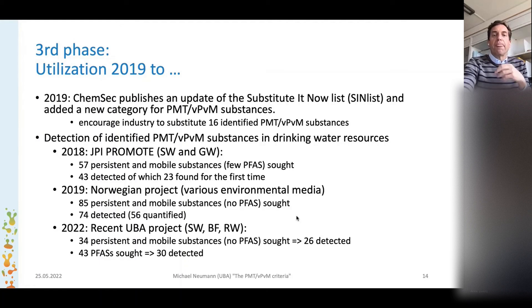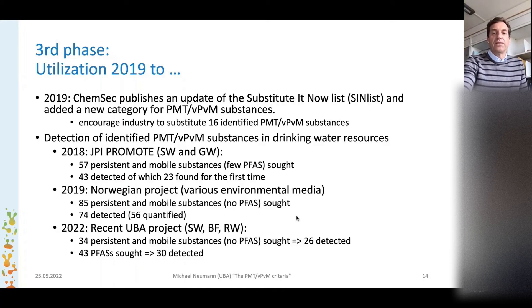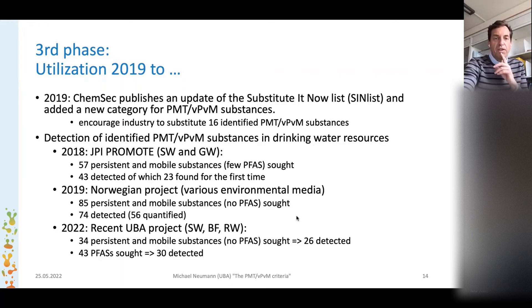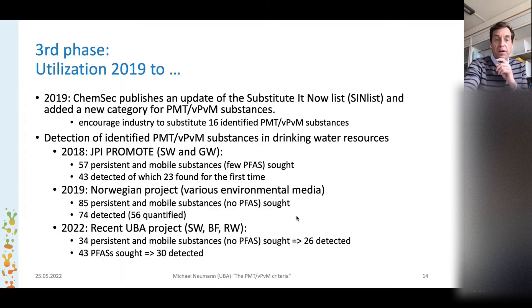The criteria have also been used in environmental monitoring by prioritizing substances based on intrinsic substance properties in addition with emission considerations. This was first done by the PROMOTE project. From 57 substances they sought, they detected 43, and 23 of them were found for the first time ever in Europe. The same has been done by a Norwegian project — they looked for 85 substances and found 75. In our currently running project, we looked at 34 organic PM substances and found 26, and we looked at 43 PFAS and found 30 of them.